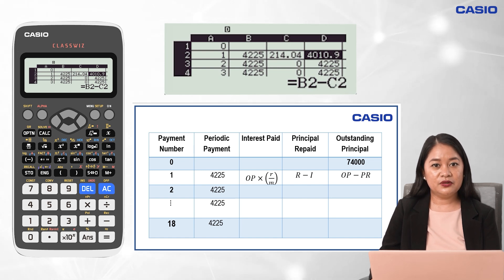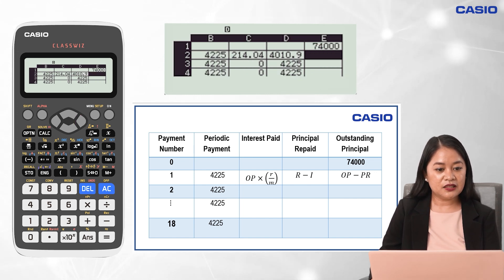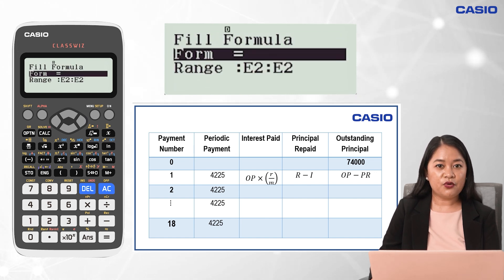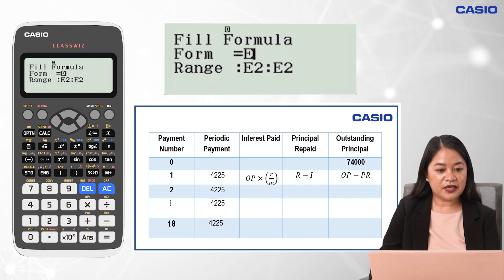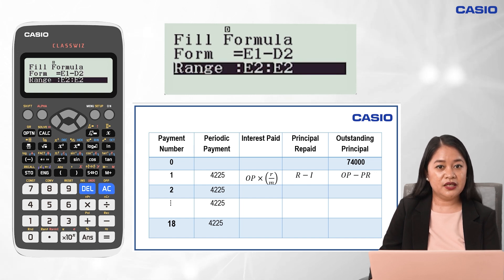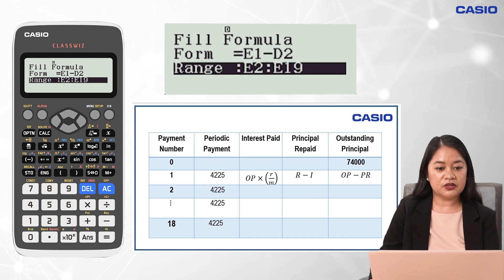For the last step, to compute the outstanding principal, deduct the current principal repaid from the previous outstanding principal. The formula is E1 minus D2. From cell E2, press Option and 1. For the formula, input Alpha, Cosine, 1, minus, Alpha, Sine, 2. Press equal. For the range, change it from E2 to E19, then press the equal button twice.